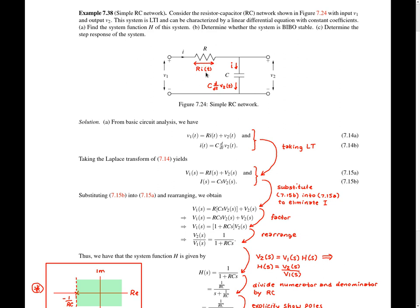Now let's consider the current passing through the capacitor. Recall that the current passing through a capacitor is equal to the capacitance C times the derivative of the voltage across the capacitor. In this case, the capacitance is C and the voltage across the capacitor is little v2. So the current through the capacitor is C times the derivative of little v2, as given in this annotation here. With these quantities labeled in the circuit diagram, it's relatively easy to write equations characterizing the behavior of this system.